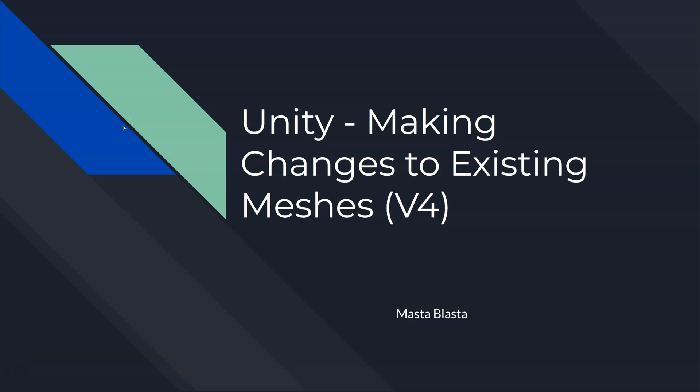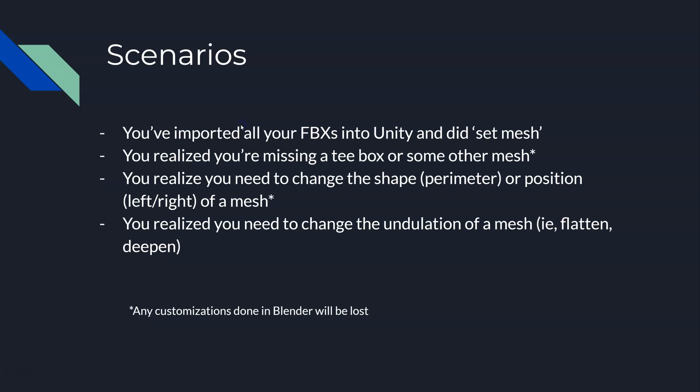Let's say you're in Unity and you have your meshes in there, you're flying around checking things out, and you realize you forgot a t-box, or that green is just not the right shape and you need to change it, or you forgot a semi-rough around this fairway. This video is about making changes to existing meshes once they're inside of Unity — how do you go back and make changes.